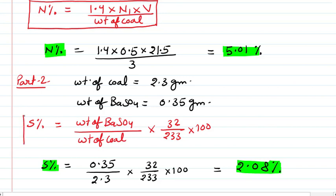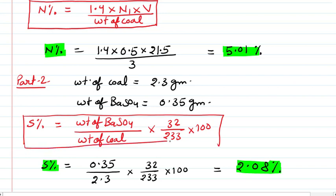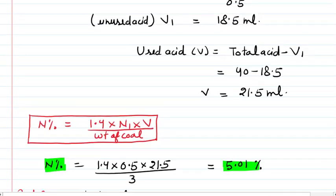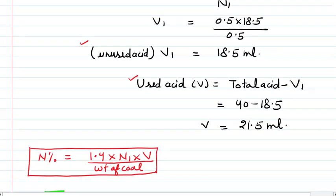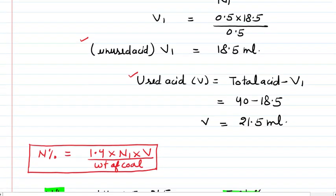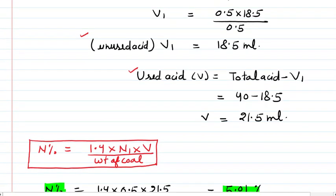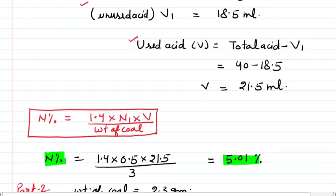For nitrogen percentage, we first apply the titration step to calculate the unused volume, then we calculate the used volume using that. After calculating this used volume, we calculate the percentage of nitrogen. I hope both parts of this numerical are clearly understood.